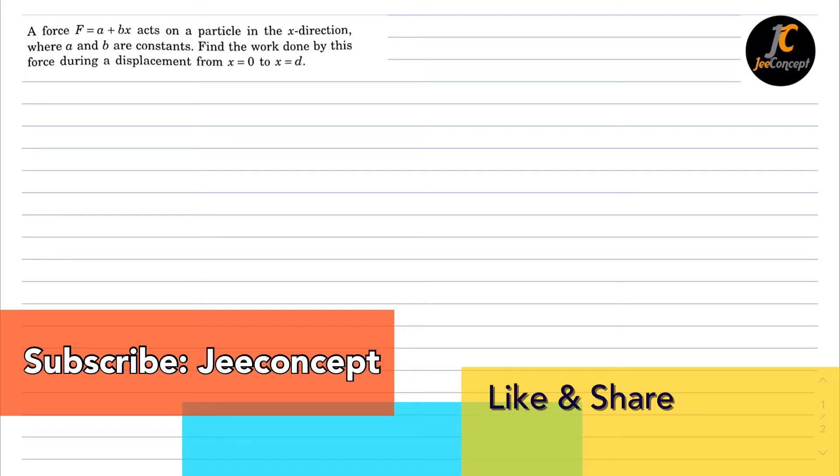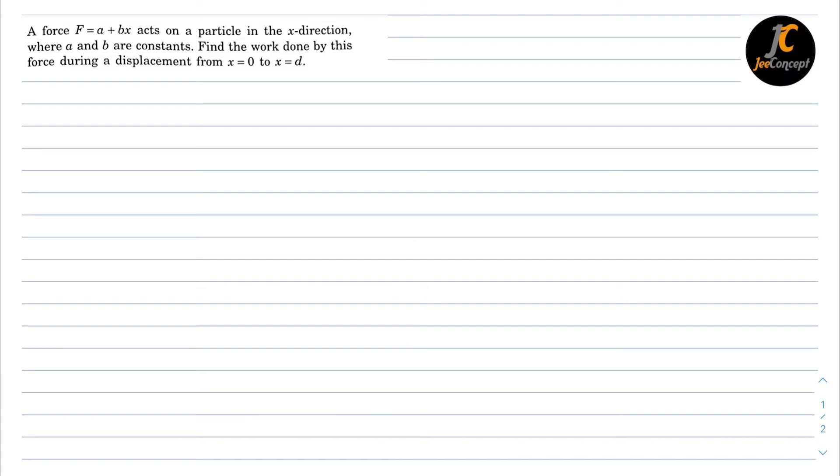Hello everyone. In this problem, a force F is equal to A plus Bx acts on a particle in the x direction where A and B are constants. Find the work done by this force during a displacement from x is equal to 0 to x is equal to d.